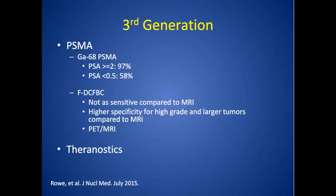DCFBC, which came out of Johns Hopkins, was studied in 13 patients and published in the Journal of Nuclear Medicine — looking at primary disease, not metastatic. It wasn't as sensitive compared to MRI, but the radiopharmaceutical had higher specificity for high-grade and larger tumors compared to MRI. This brings up the idea of PET-MRI — combining MRI with this radiopharmaceutical for primary disease to detect those higher-grade tumors that will lead to more morbidity and mortality. It's a game changer, but PET-MRI machines cost four to five million dollars and there's no reimbursement, so many questions remain.